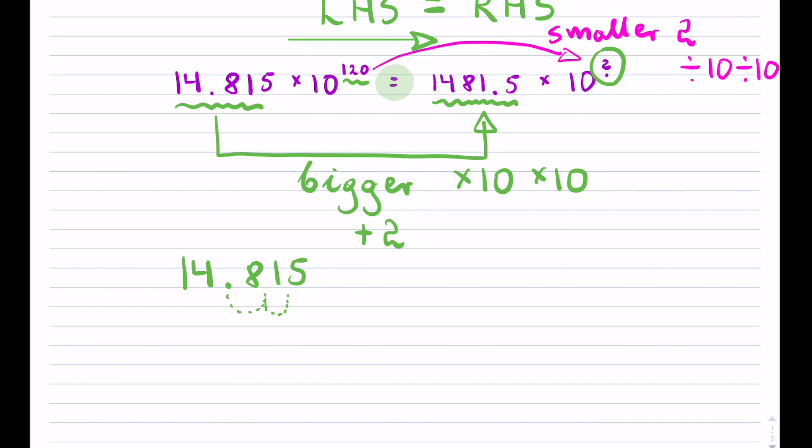But you may know, division by 10 two times has a negative 2. So your question mark becomes 120 and it got smaller by 2. So the answer is 118.